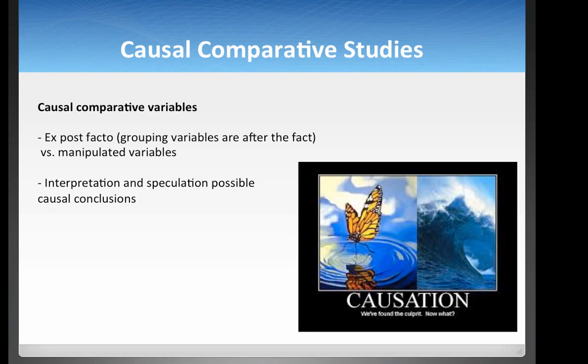Another example: there's some research that says people who have dogs live longer. In that case, it was an ex post facto study — they looked at the life expectancy of people who already had dogs compared to people who didn't already have dogs.